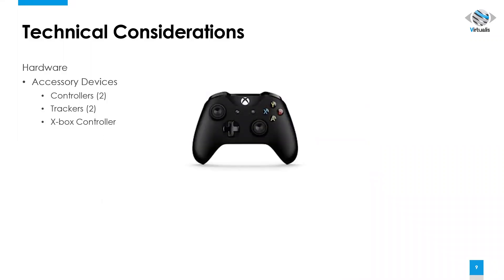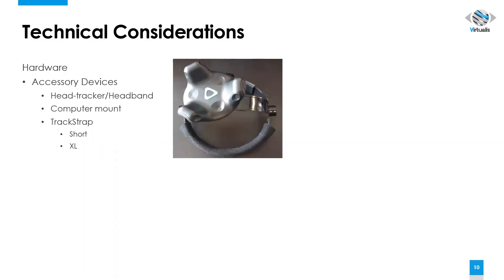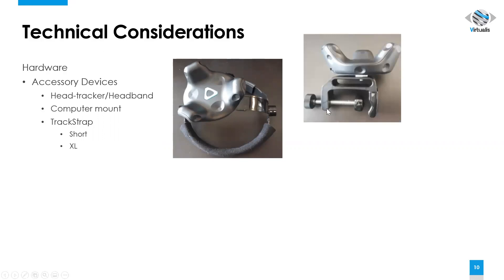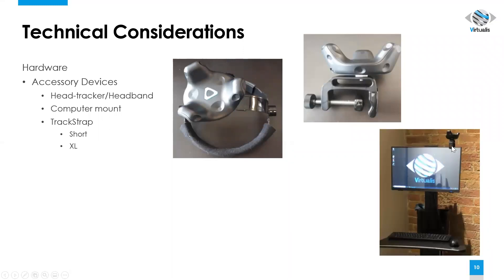You should also see an Xbox controller. All of the accessory devices fit in the storage basket at the back of your system to keep them organized. Other accessory devices in that storage basket are the head tracker, in which the tracker can be attached to the headband. There's also a computer mount where the tracker can be fastened to the device. The computer mount sits at the top of the computer screen, secured to the computer monitor.